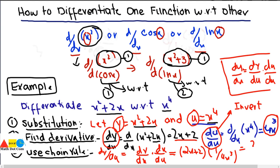So (2x + 2)/(4x³) is the derivative of x² + 2x with respect to x⁴. These are the just three steps required to find the derivative of one function with respect to the other. Let's have one more example to reinforce the concept.